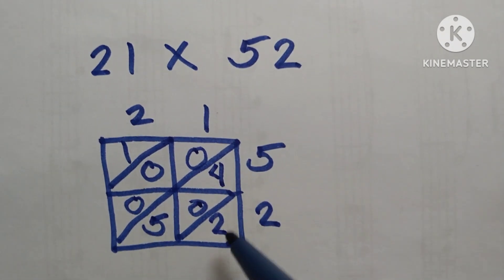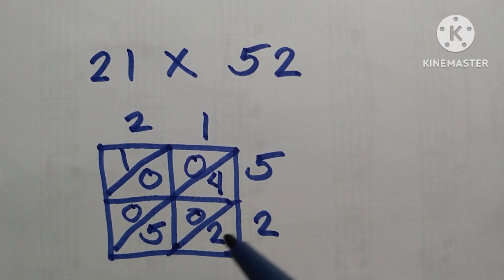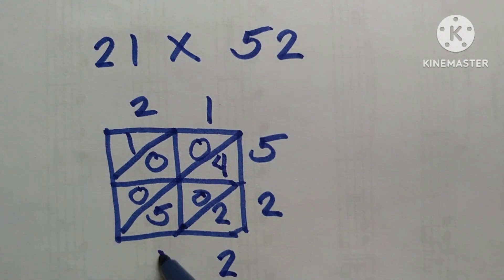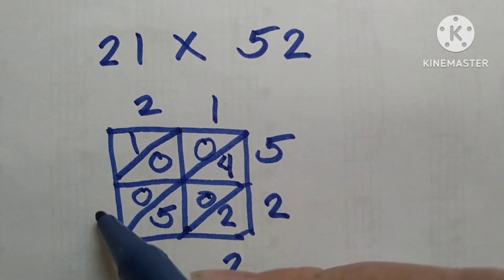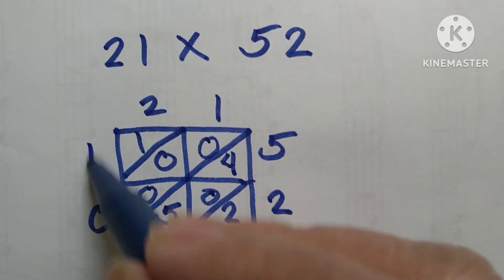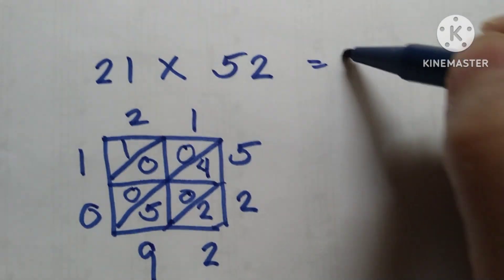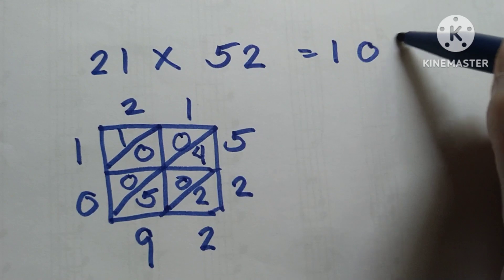Add the numbers diagonally. Two—bring down to here. Four plus zero is four, plus five is nine. Zero here and then zero here, and then copy one. Our final answer is 1092.